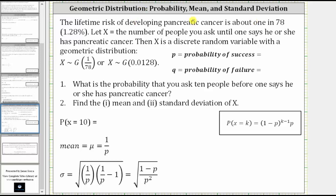The lifetime risk of developing pancreatic cancer is about one in 78, or approximately 1.28%. Let X equal the number of people you ask until one says he or she has pancreatic cancer. Then X is a discrete random variable with the geometric distribution, which we represent using this notation here.